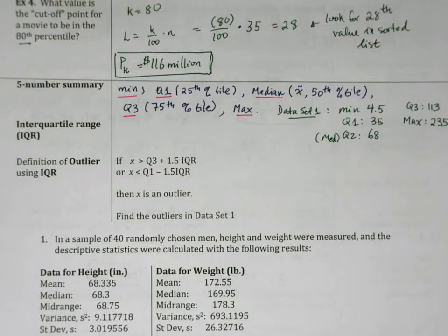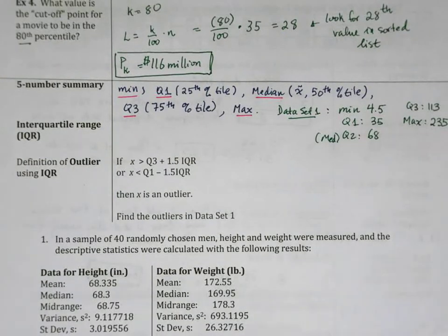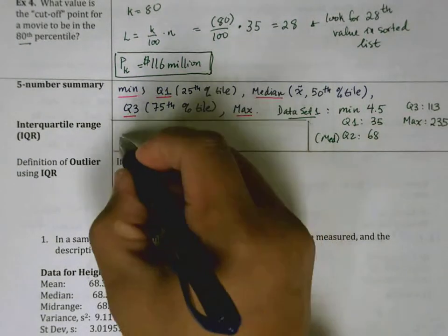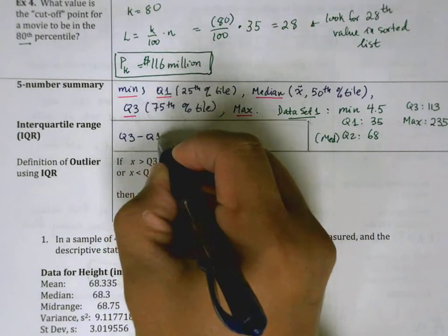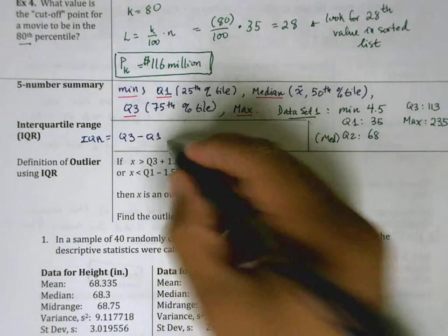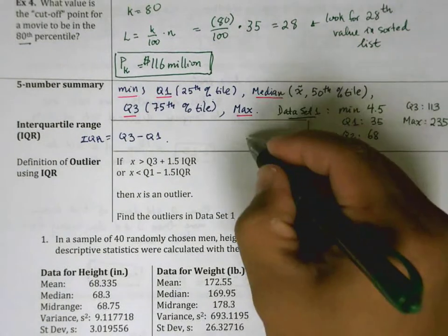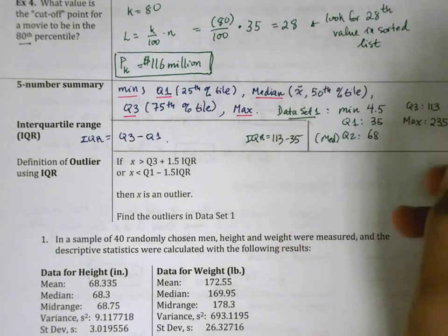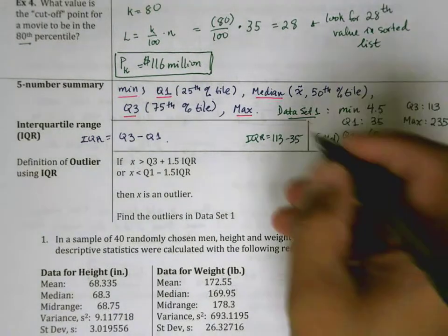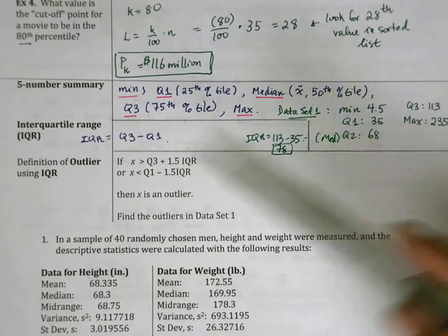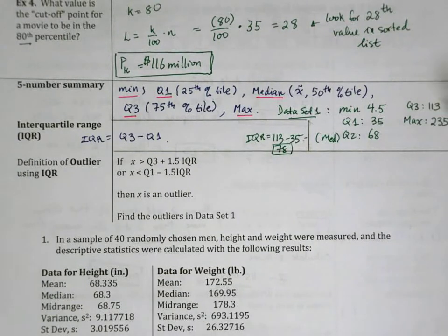So with that in mind, we can now use this information to do some other very useful calculations. One of the things that we're going to use a lot in stats is the interquartile range, or the IQR. This is pretty straightforward — it's Q3 minus Q1. And so for our example in data set 1, the IQR is 113 minus 35, which is 78. Your calculator figures it out for you.